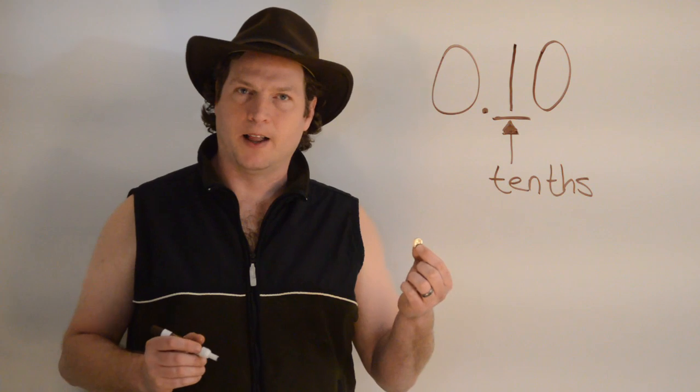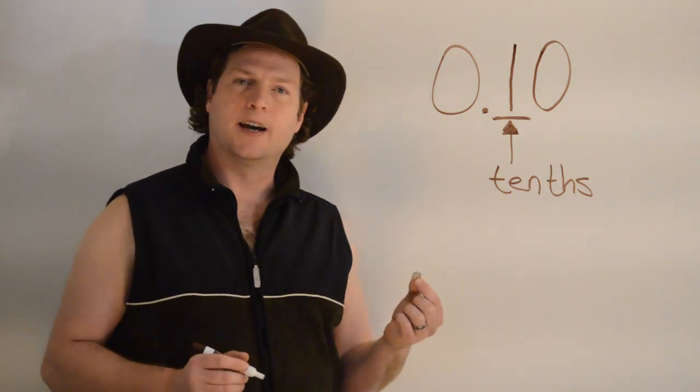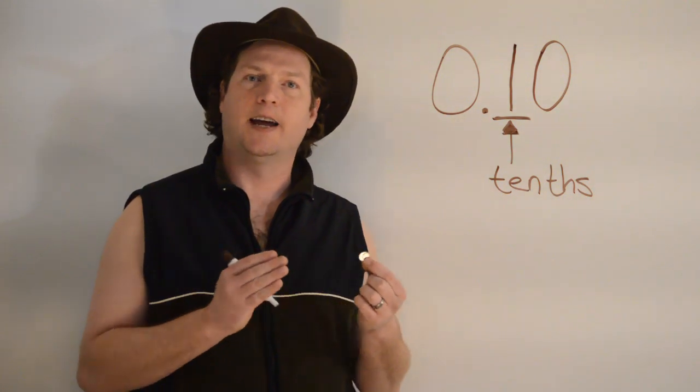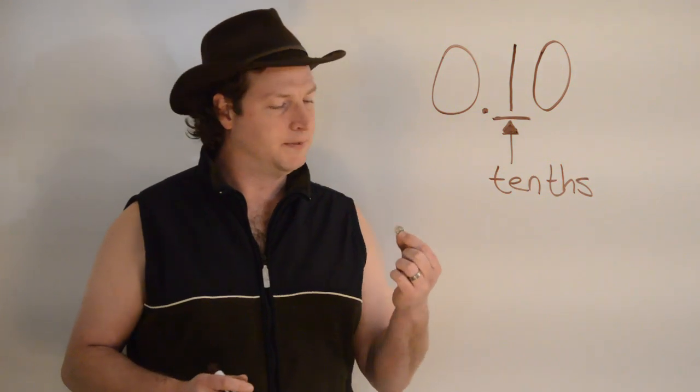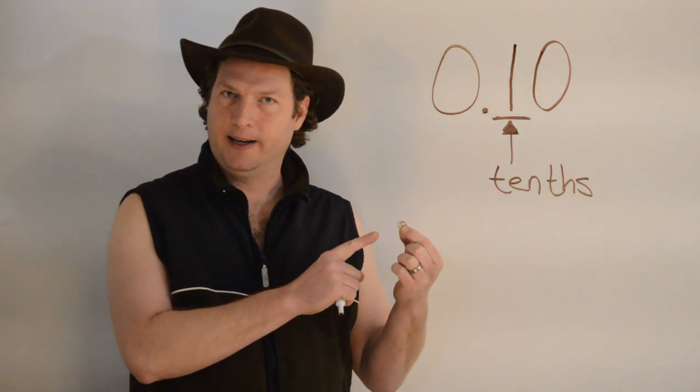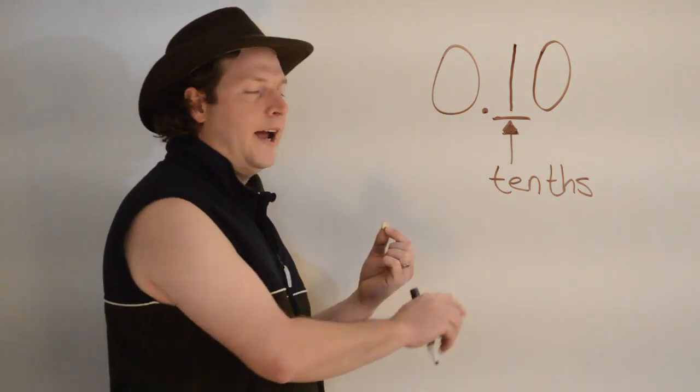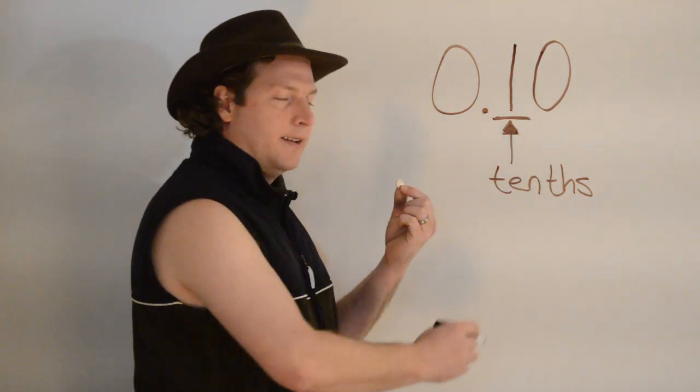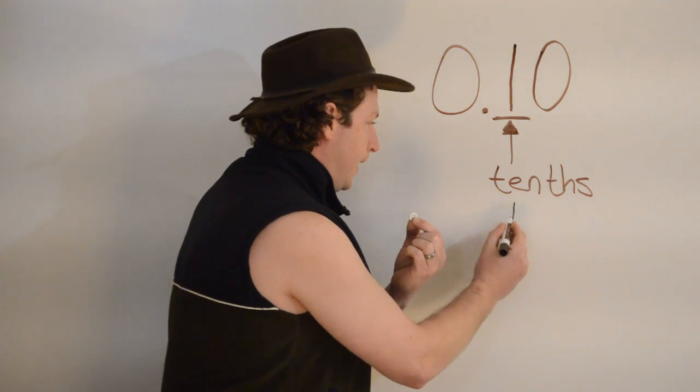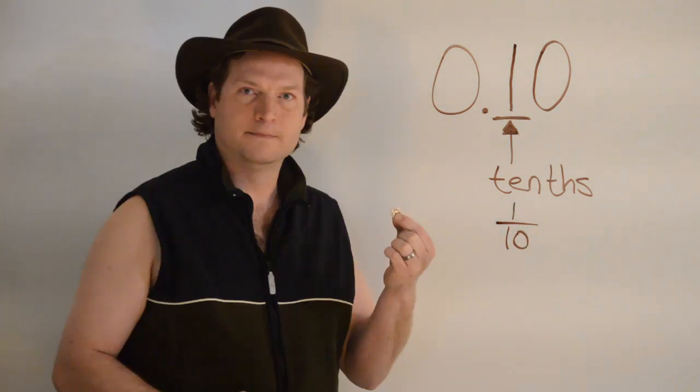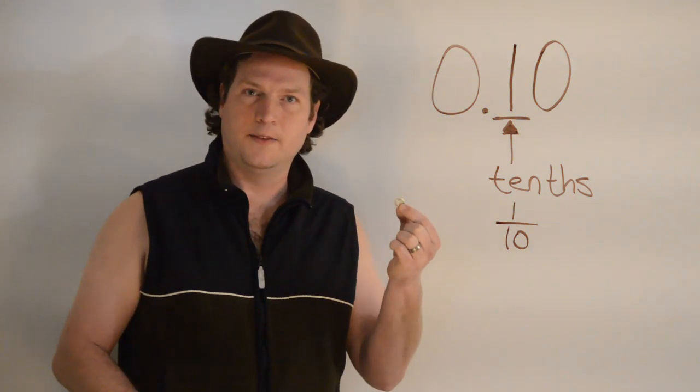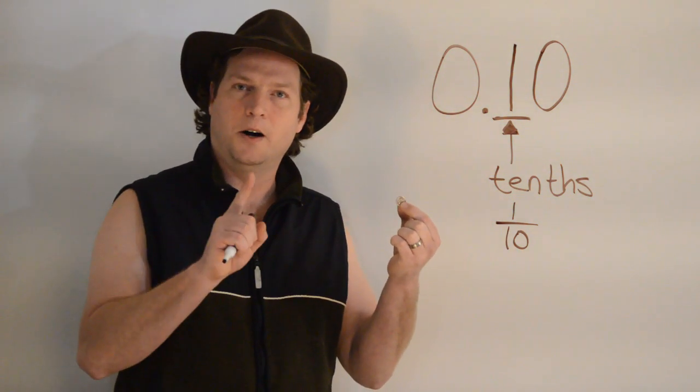For the tenths place value, I like to think about dimes because it's the same as ten cents, which means we need ten shiny dimes to equal one whole dollar. And as a fraction, one tenth, like one dime, could be written as one over ten. Because ten of these will give us one whole number.